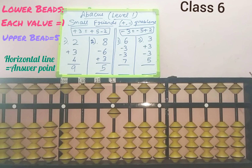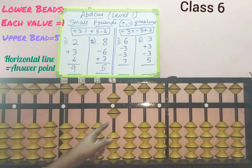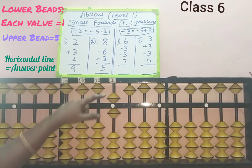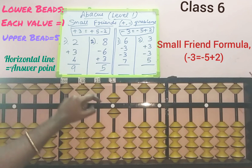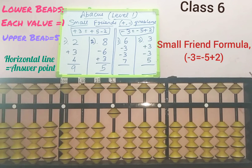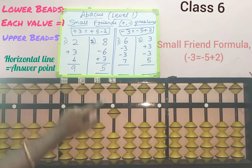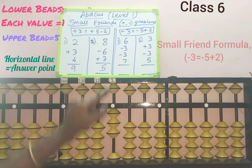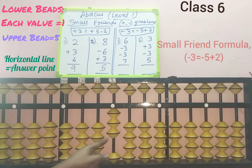Next, second row: minus 3. We should remove 3 beads from the answer point in the ones slot. Here only 1 bead is added, so we cannot remove 3 directly. Use the formula for removing 3 — 3 is less than 5, so check the small friend formula. The question has a minus symbol, so check whether we can do minus 5. Five is added, so minus 5. Three's friend is 2; in the question it is minus, so we should add 2: 1, 2. Minus 5 plus 2 is the small friend formula for minus 3 — minus 3 completed.